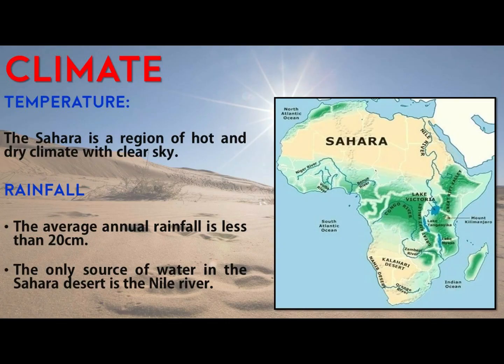Let's see the climate of the Sahara desert. Under climate we will look at temperature and rainfall. Sahara is a region of hot and dry climate with a clear weather sky, and the temperature remains high throughout the year. The average rainfall is less than 20 centimeters. The only source of water in the Sahara desert is the Nile river — the longest river in the world — which flows through the Sahara desert.